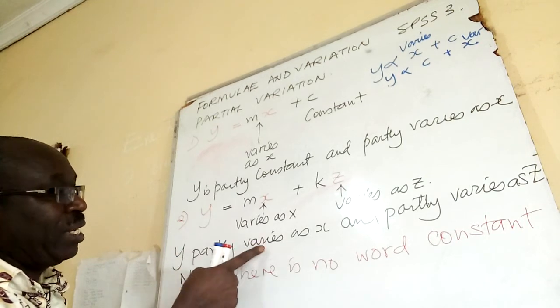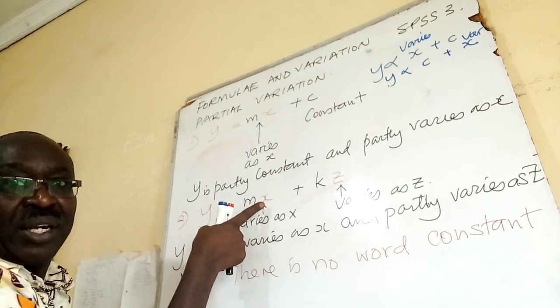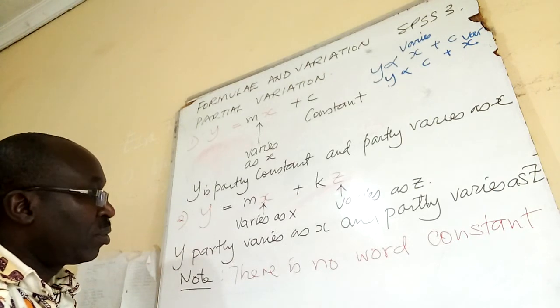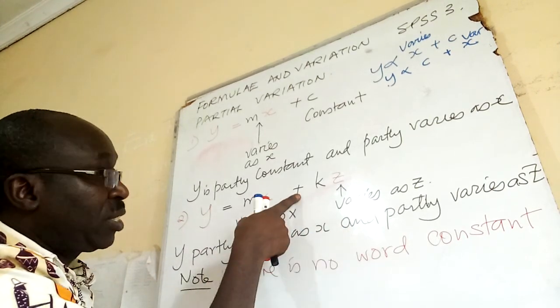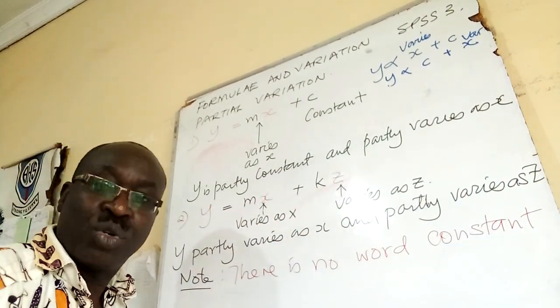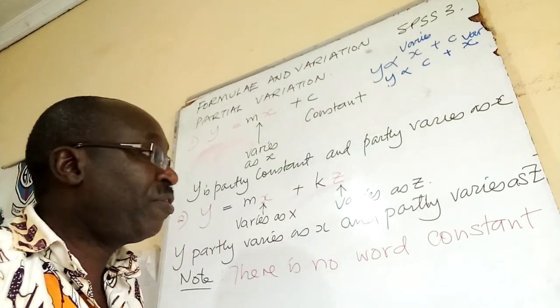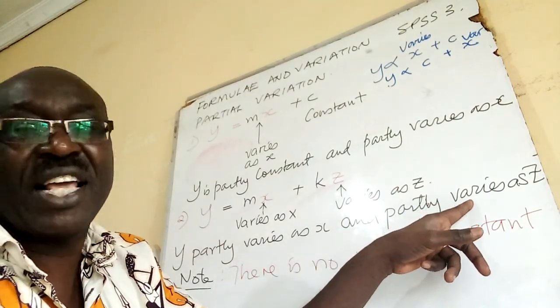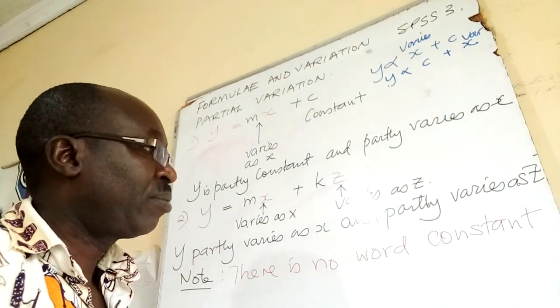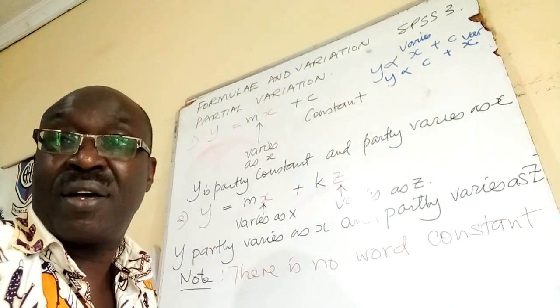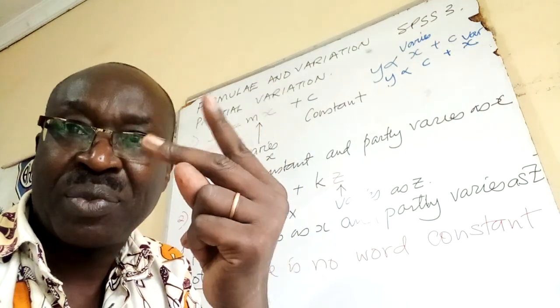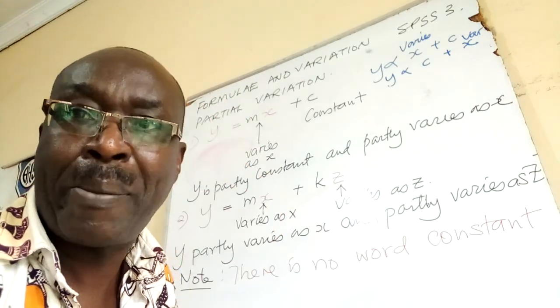Y partly varies as x. And, that is the addition. Partly varies as z. So, he can even bring the word inverse. If I said, partly varies as inverse of z, then it would be 1 over z. Those are simple tricks using words. But, the key thing, there are two signs of partial variation.